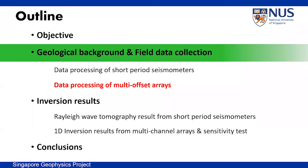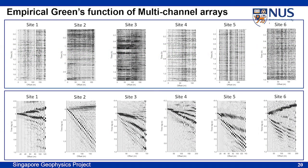For the multi-channel arrays, unlike the short-period seismometer processing, we set one trace as a virtual source and cross-correlate all other receivers' data with that one particular receiver. After standard band-pass filtering from 1 to 50 Hz, normalization, and spectral whitening, we cut the time-domain data into many small segments and cross-correlate with one trace. After stacking all cross-correlated segments, empirical Green's functions for multi-channel arrays can be achieved. In the cross-correlated results, most of the energy is from Rayleigh waves, which show very strong dispersion features — lower frequencies travel faster than higher frequencies.